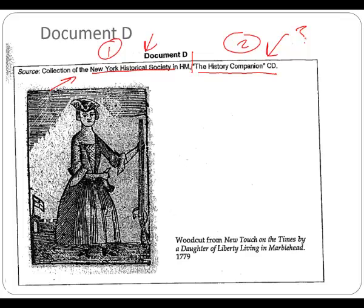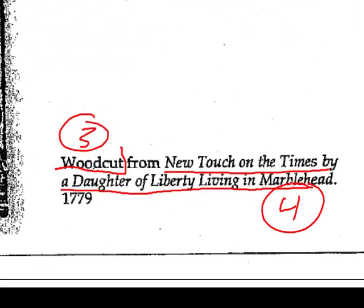Moving forward — woodcut. That's an important idea for content. Again, it's your three points wherever you want to go with this. From the New-Touch on Times, 'A Daughter of Liberty Living in Marblehead' — that's another point. And the year is another point. Any questions on content? Let's look at context.